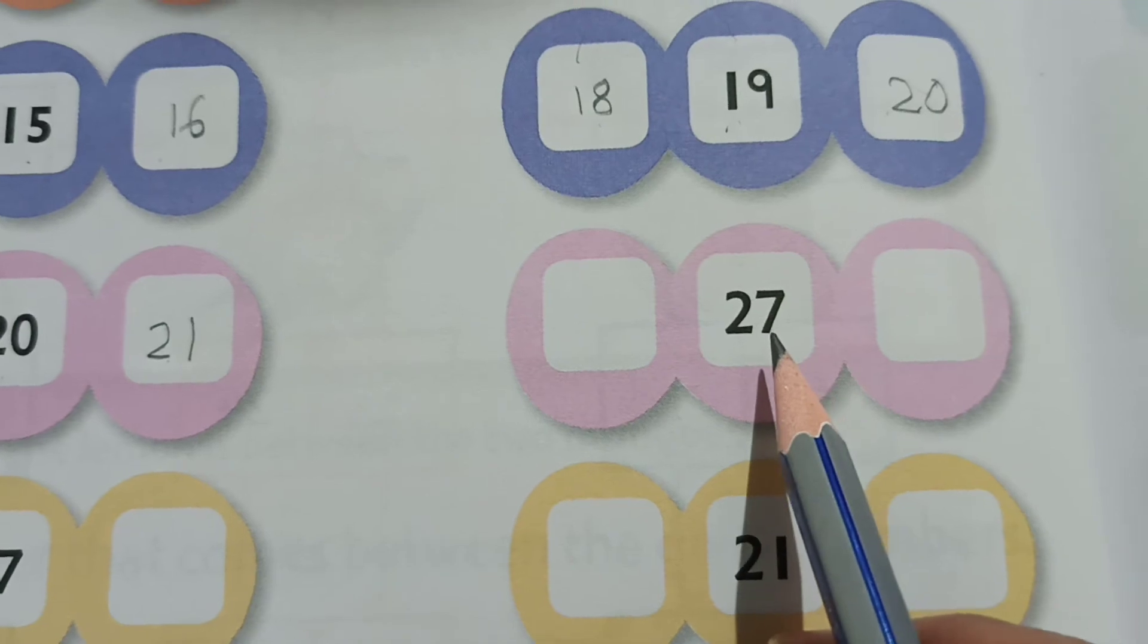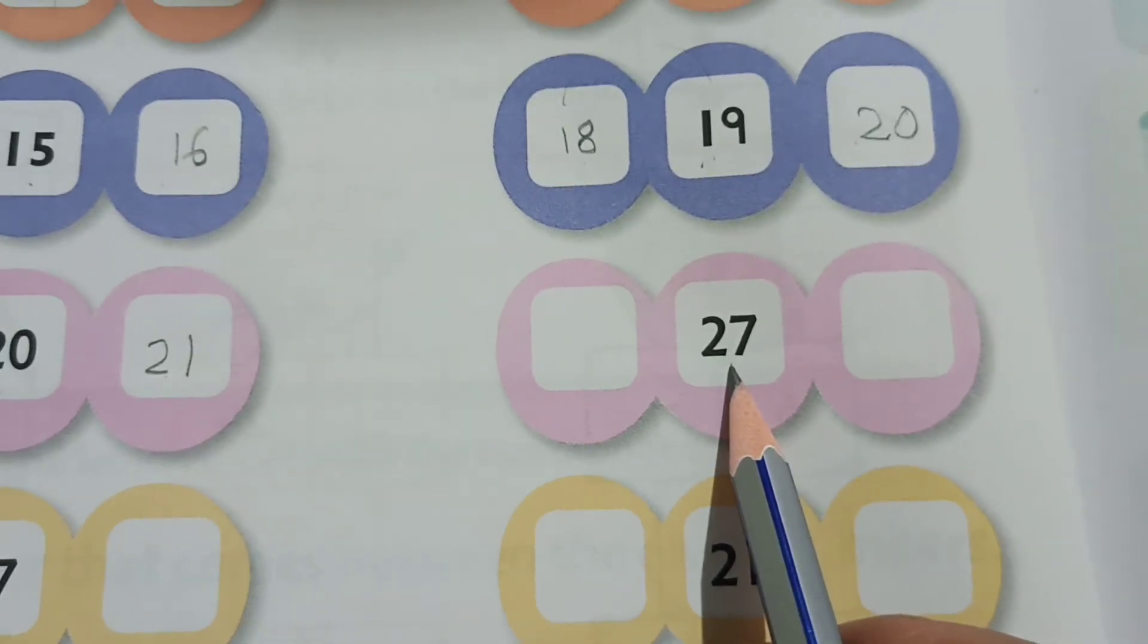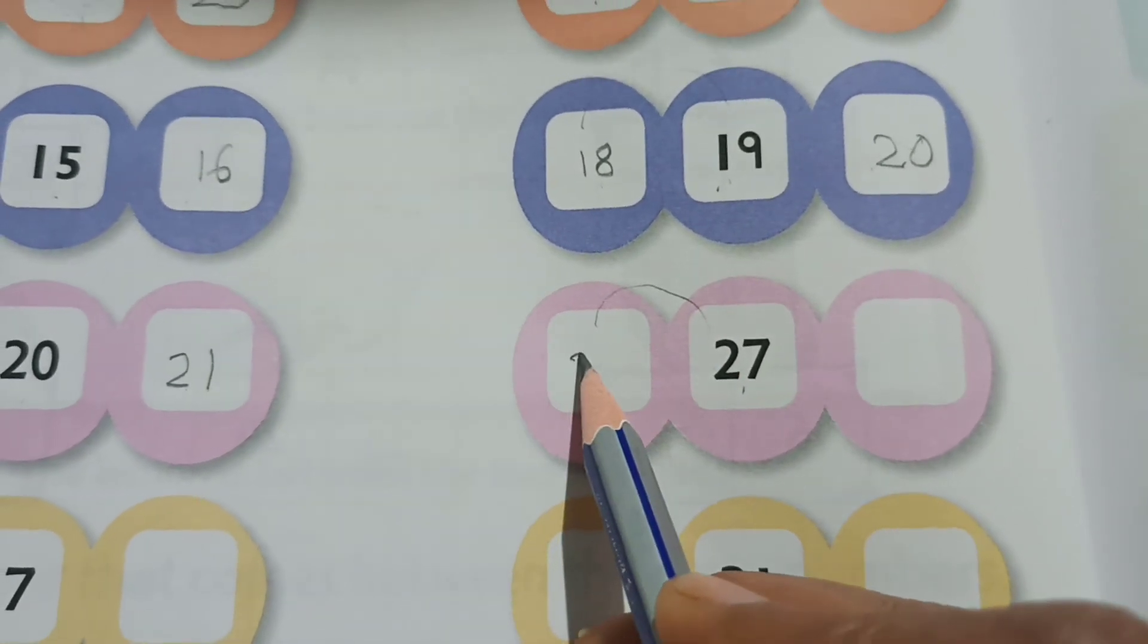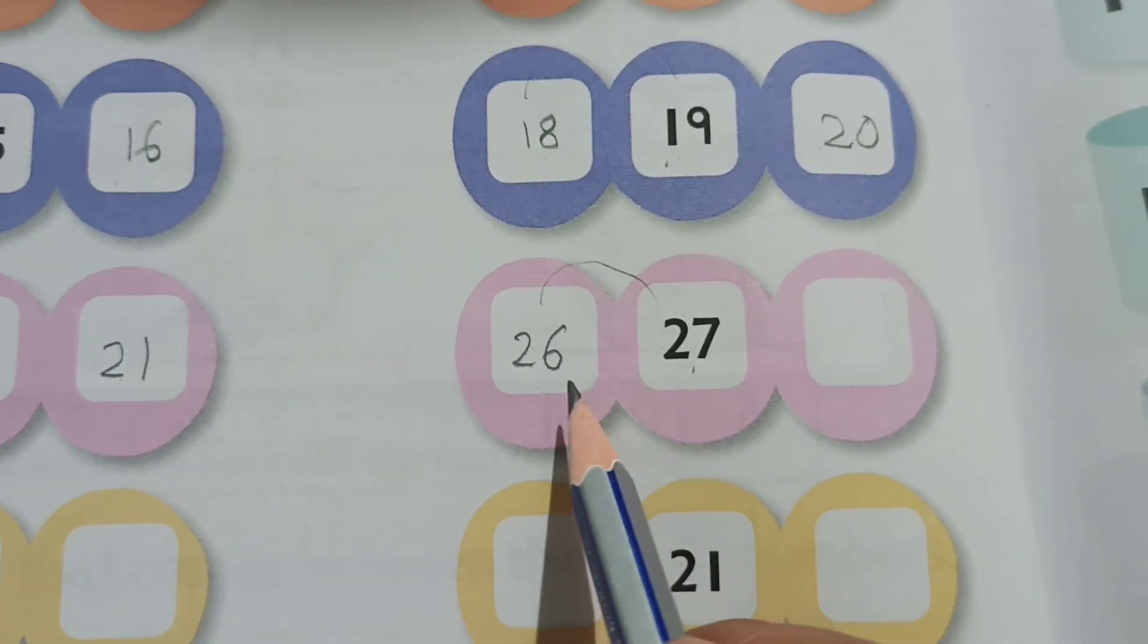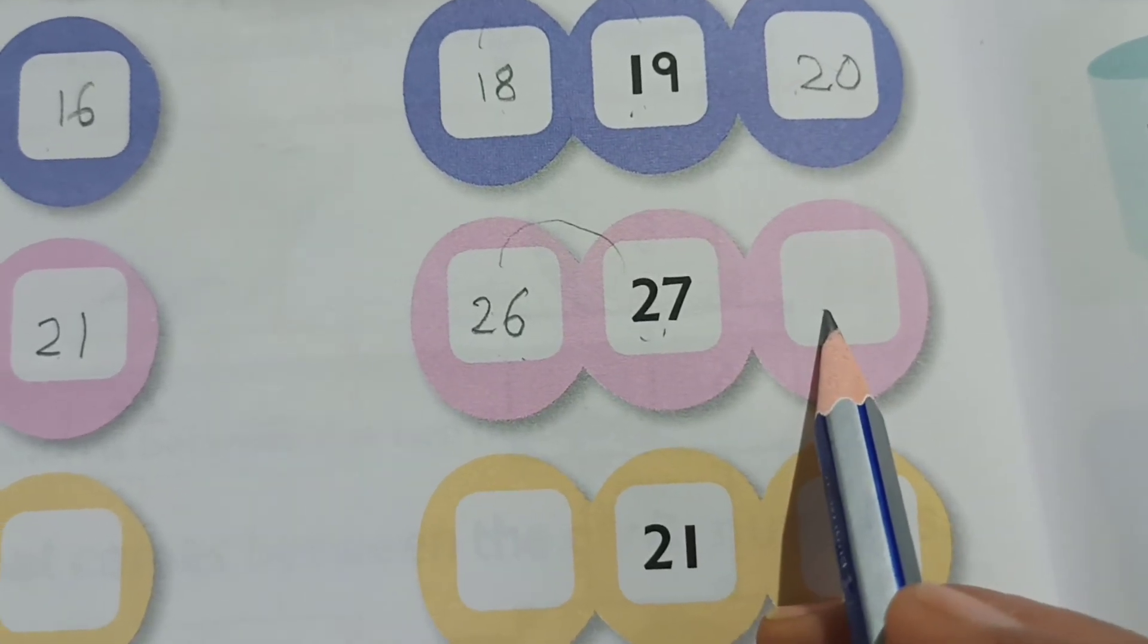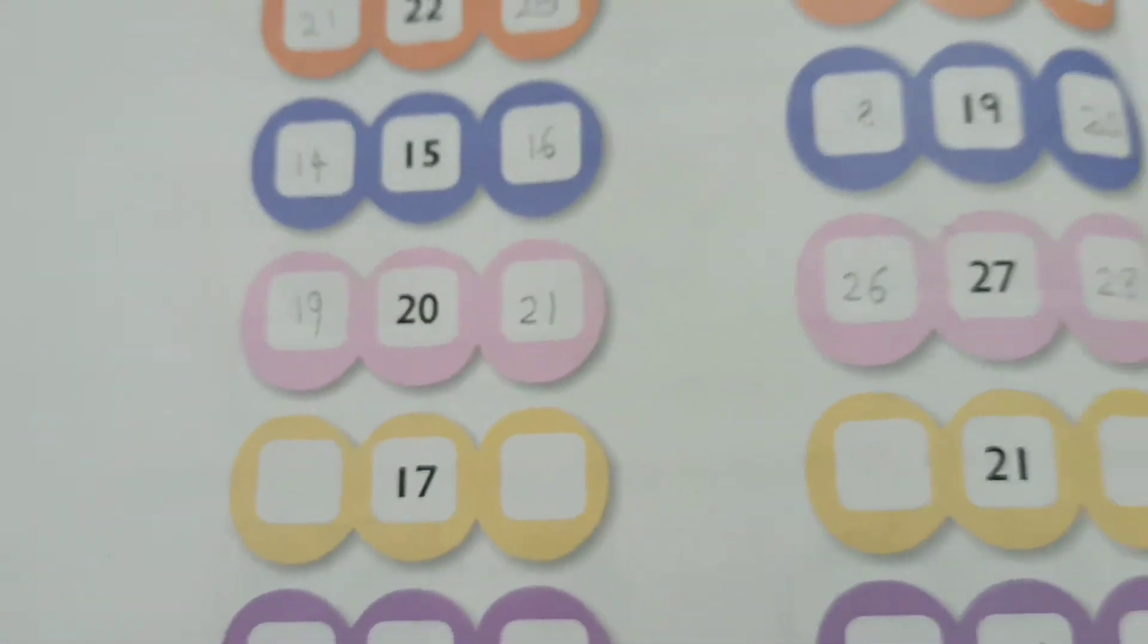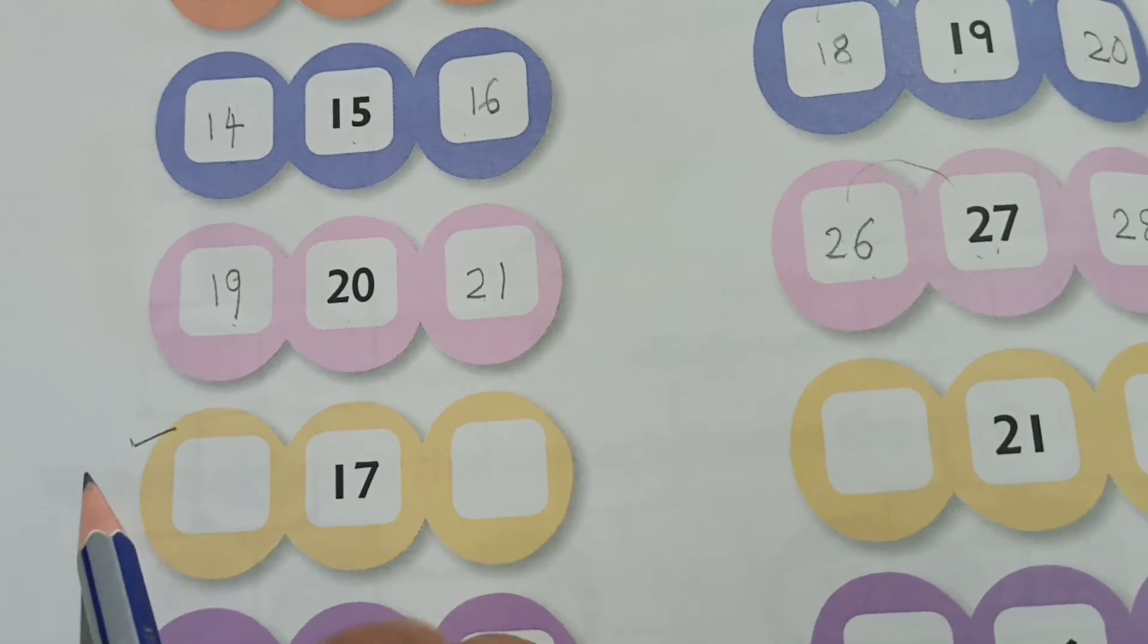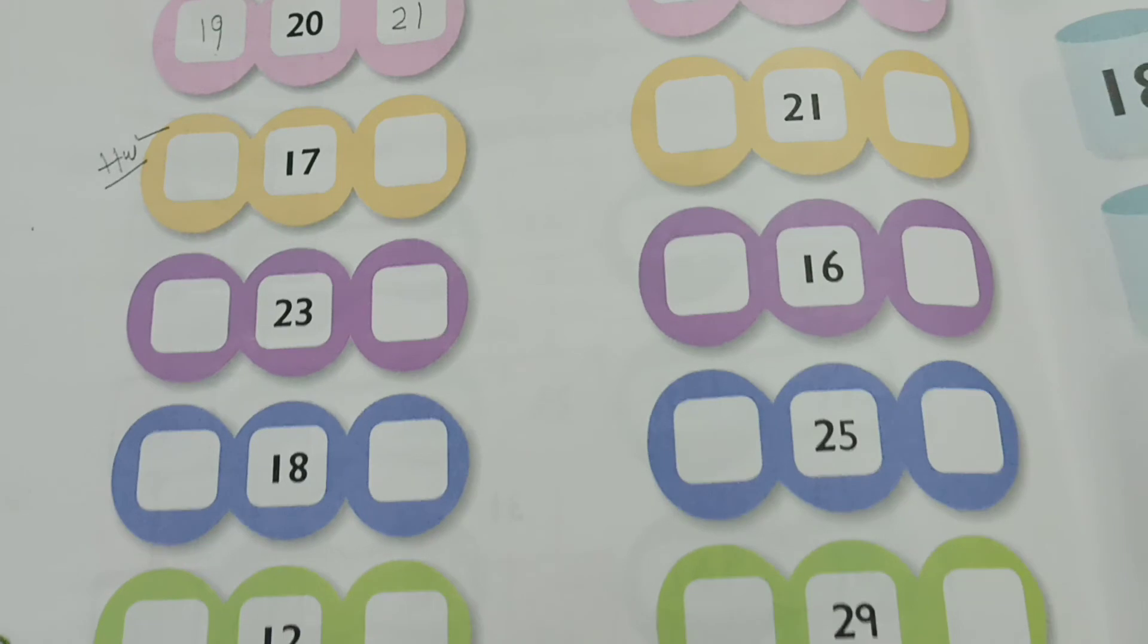Now the next number here, twenty-seven. So what comes before twenty-seven? Before twenty-seven comes twenty-six. So here you can see twenty-six, twenty-seven, twenty-eight.